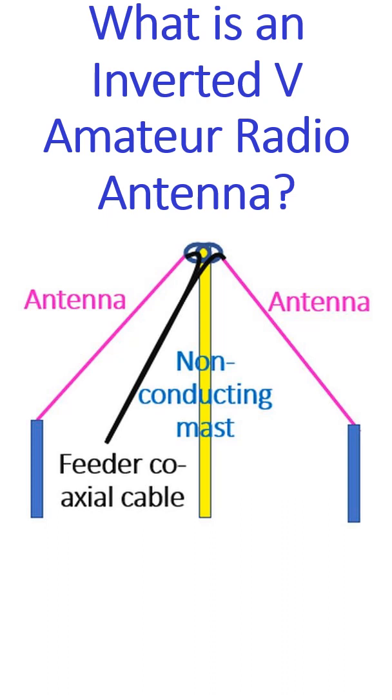Though theoretically the performance of a horizontal dipole and inverted V are similar, practically it can be lower for the inverted V. This is because of proximity to the ground, effect of ground conductivity, and end effects.